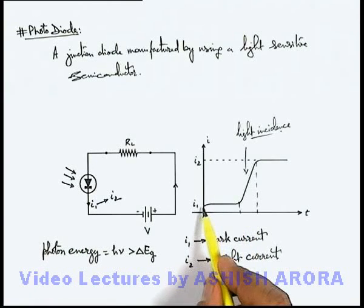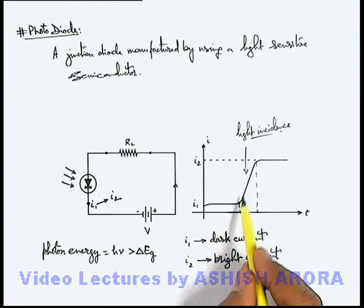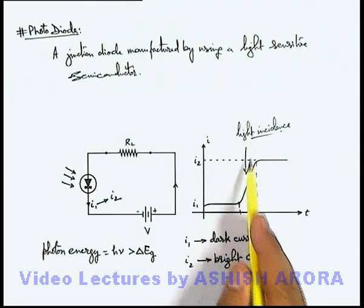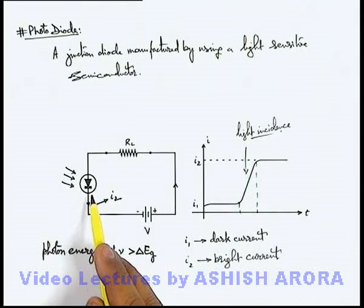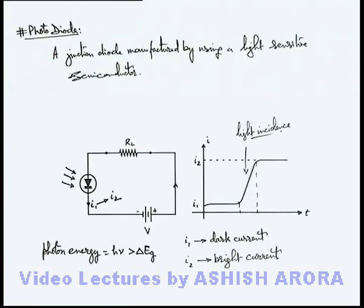That's why you can see in the graph, current suddenly changes from i₁ to a higher value i₂ as soon as some light is incident on the junction. This is the basic working of a photodiode.